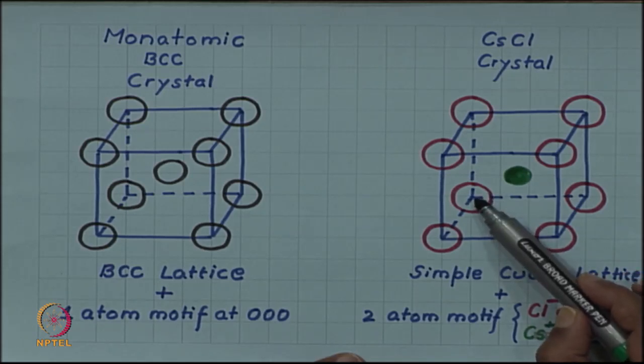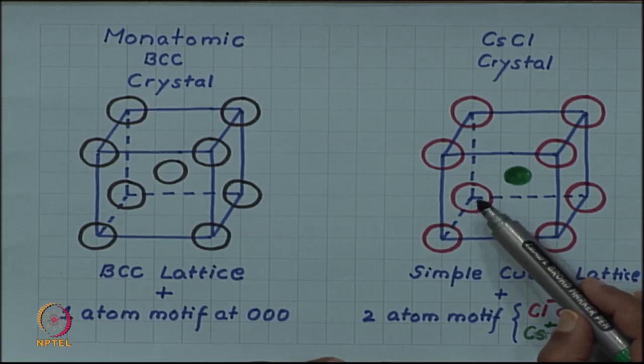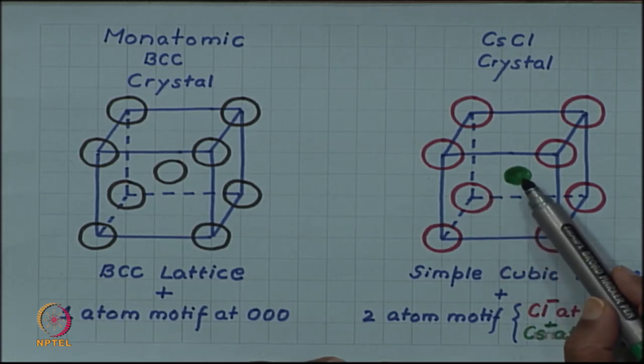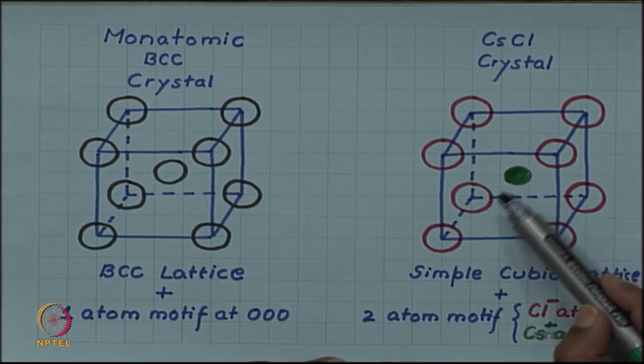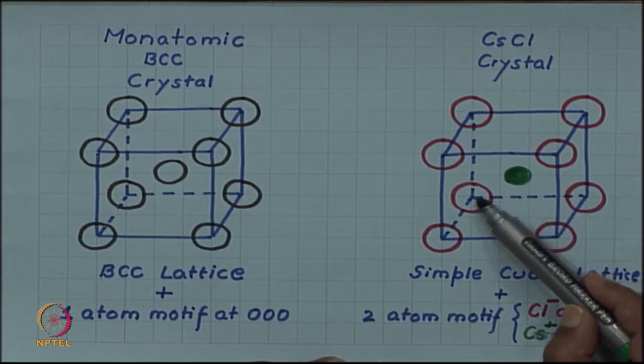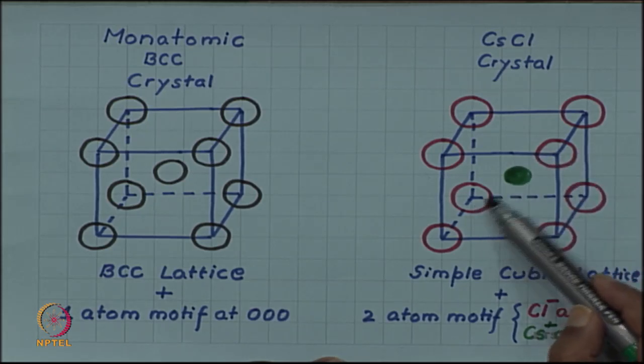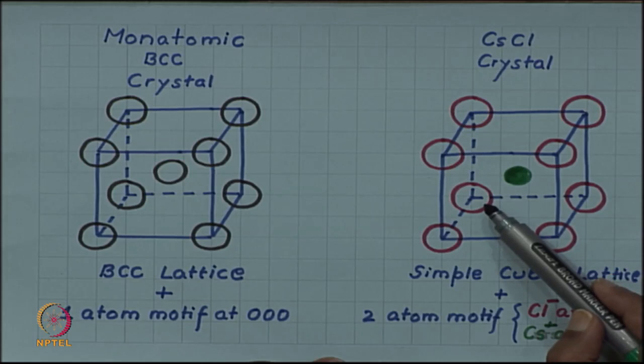The corner ion and the body center ion are not equivalent. The corner point and the body center point are not equivalent lattice points. So the equivalent lattice points are only at the corners. This is because of the occupancy of corner and body center by different ions.